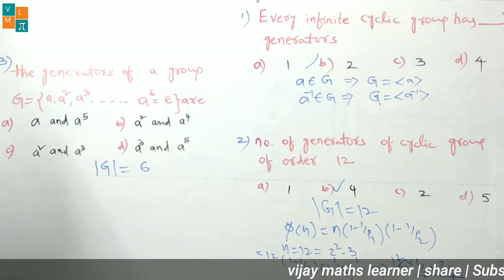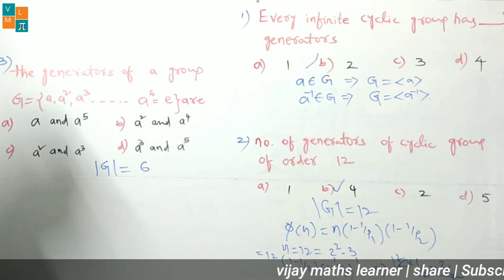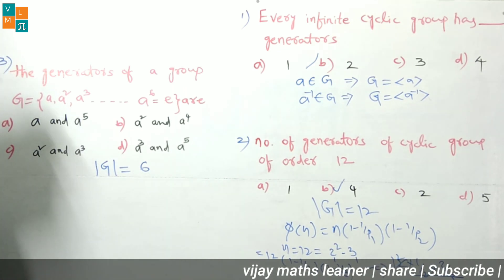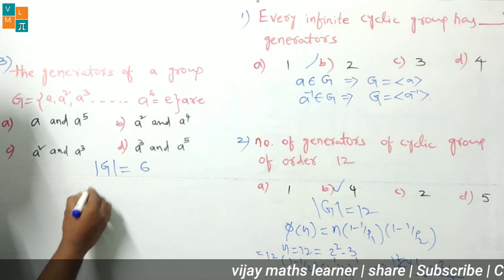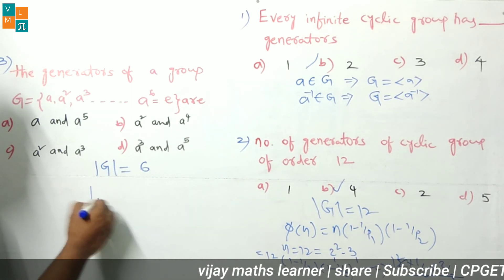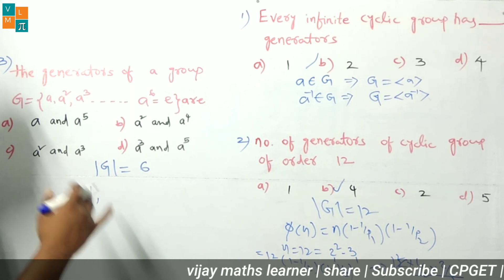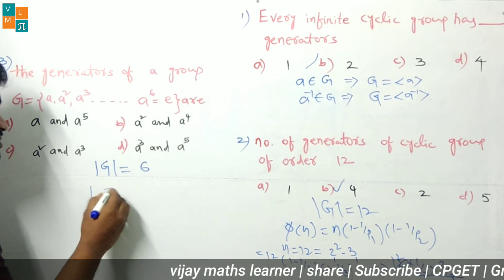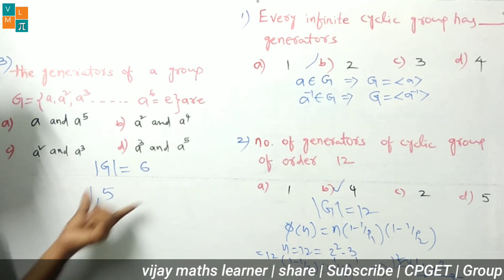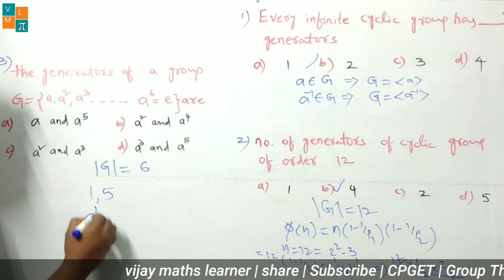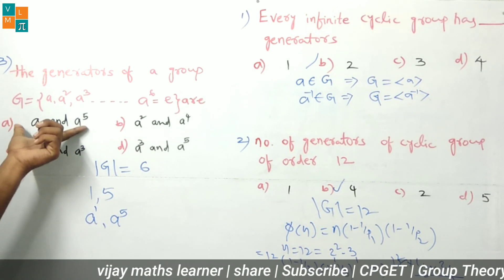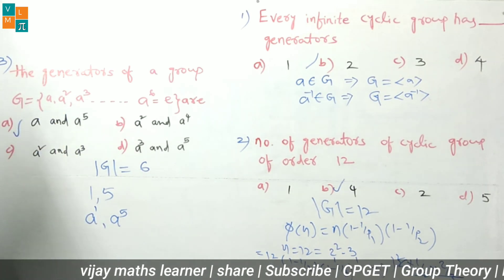Generators are elements relatively prime to 6 and less than 6. Checking: 1 is relatively prime to 6; 2 is not (gcd(2,6)=2); 3 is not; 4 is not; 5 is relatively prime to 6. So 1 and 5 are co-prime to 6, meaning a¹ and a⁵ are the generators of group G. Option A is the correct answer.